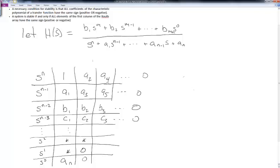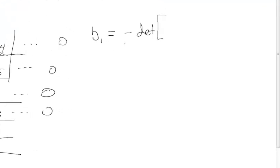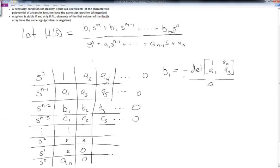To calculate coefficient b1, we take the negative of the determinant of the 2×2 subarray directly above b1: that's the determinant of [1, a2; a1, a3], divided by a1. For b2, we follow a similar operation but strike out the second column and use the first and third columns instead, giving the determinant of [1, a4; a1, a5], again divided by a1.